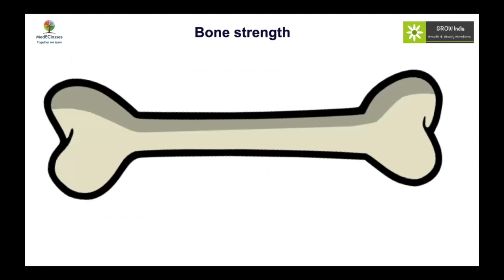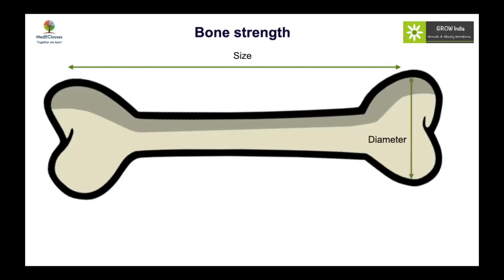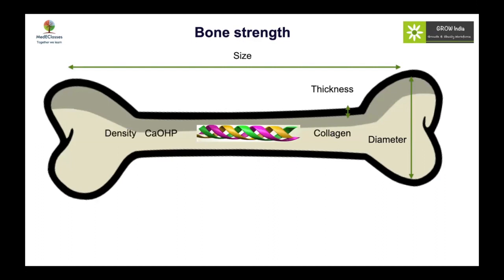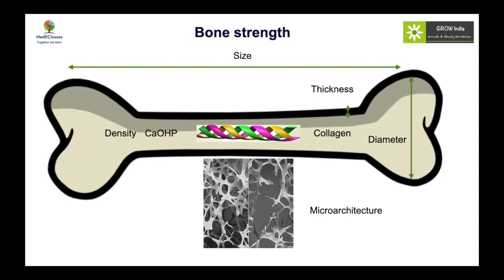Bone strength depends on more than just bone mineral; it also depends on bone size, diameter, cortical thickness, and collagen content, as well as micro-architecture. A shorter or smaller bone will be weaker; a broader or thicker bone will be stronger. What we assess with DEXA is just the bone mineral density, so it cannot be used as a perfect surrogate marker for overall bone strength.